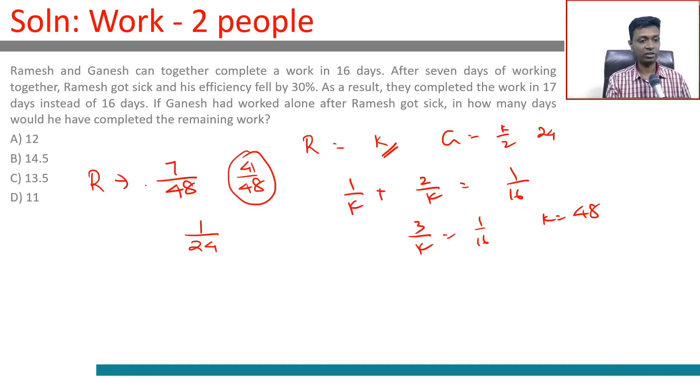41 by 48 needs to be done by Ganesh completely. Ganesh can do 1 by 24 in one day, so he'll have to do 41 by 48 into 24 by 1, which equals 41 by 2 or 20.5 days. So he'll finish in 20.5 days.